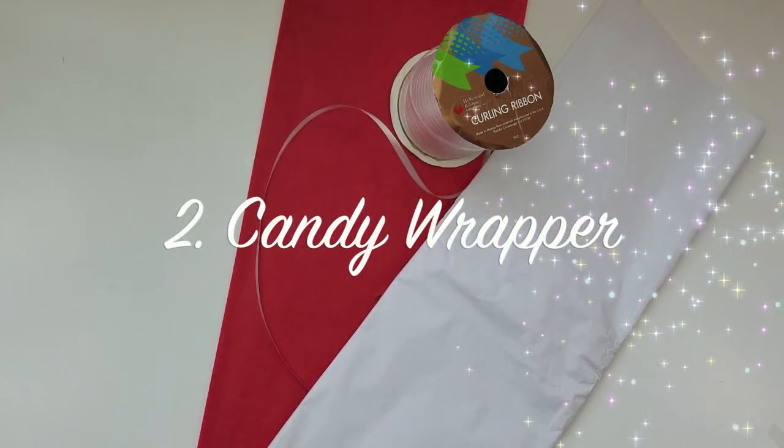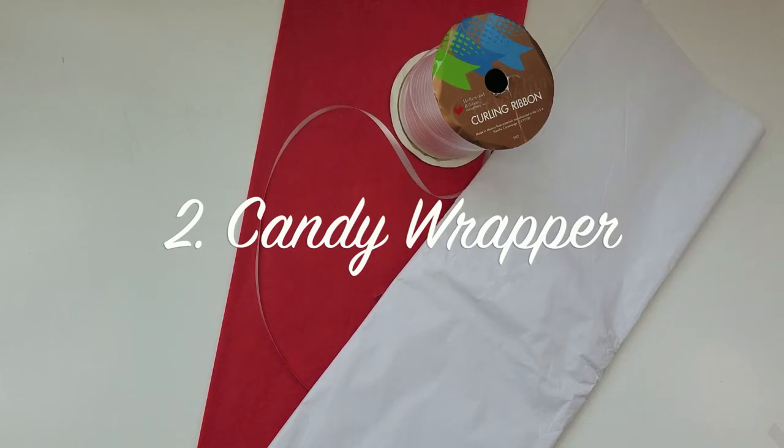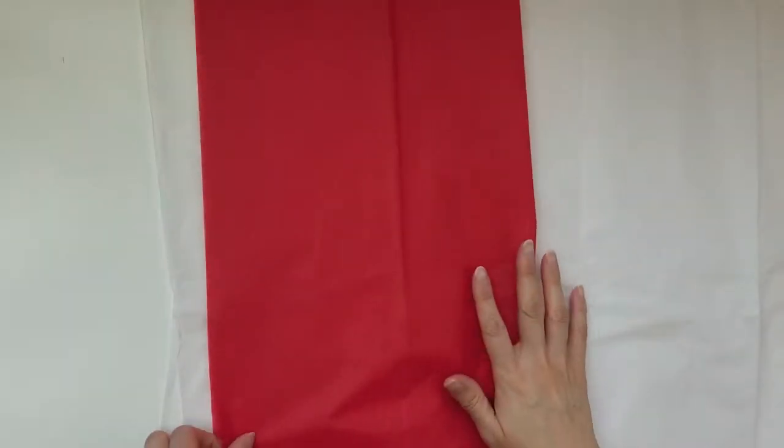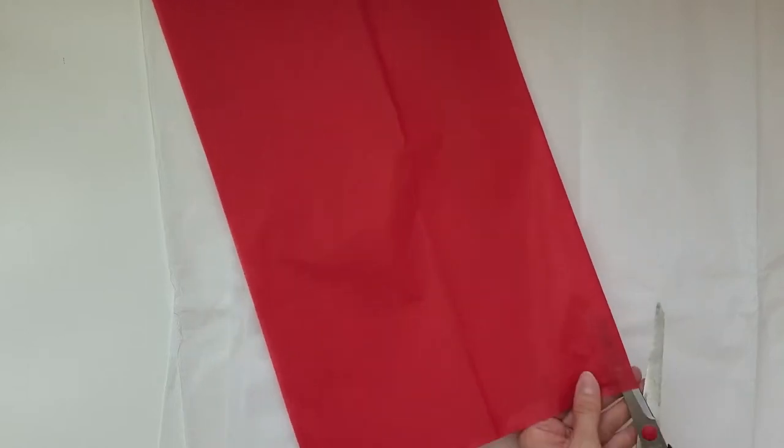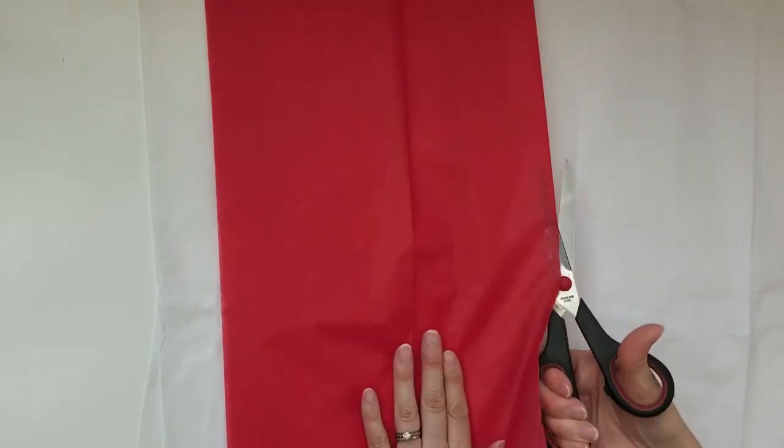Next up we have the candy wrapper method. This is perfect for gifts that don't come in boxes. Take your paper, fold it in half, and cut it into two equal parts.